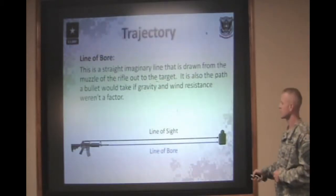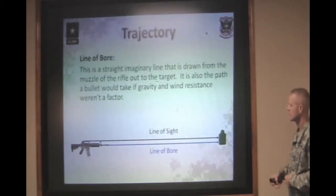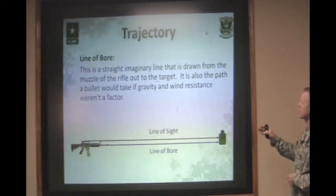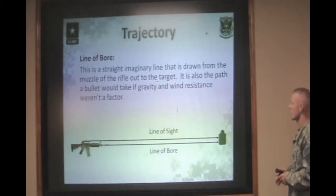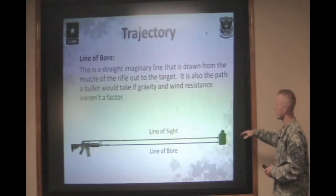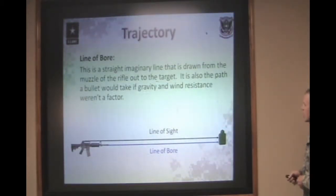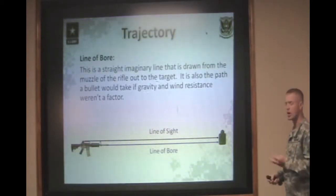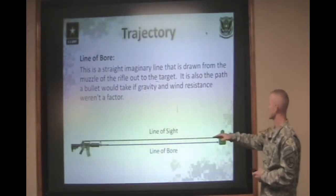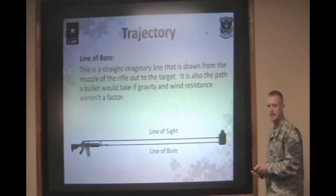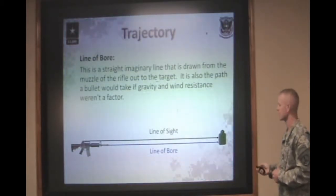The next thing we're going to talk about is the line of bore. This is an imaginary line drawn from the center of the bore all the way straight to the target. If the bullet wasn't affected by gravity or air resistance, this would be the path of the bullet straight to the target — if you're a laser or you're shooting in a vacuum.